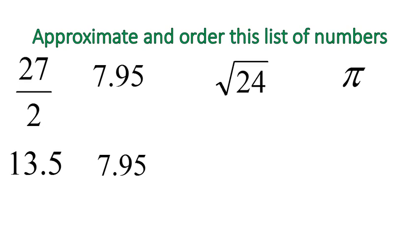Now, the square root of 24 is the tough one. This is the one that we need to approximate. It's between 4 and 5 because 4 is the square root of 16, and 5 is the square root of 25. So it's between 16 and 25.